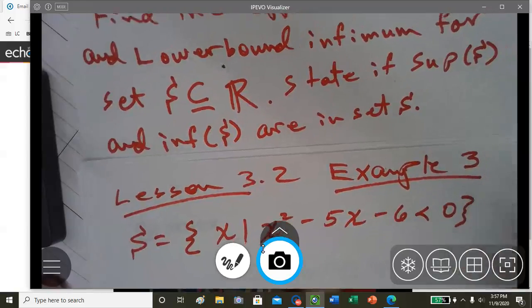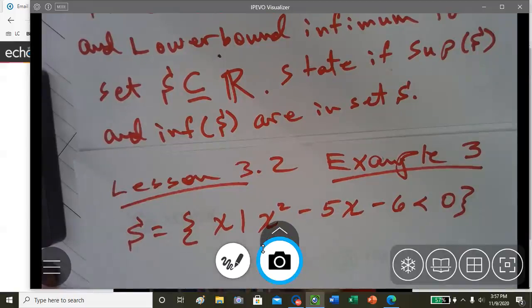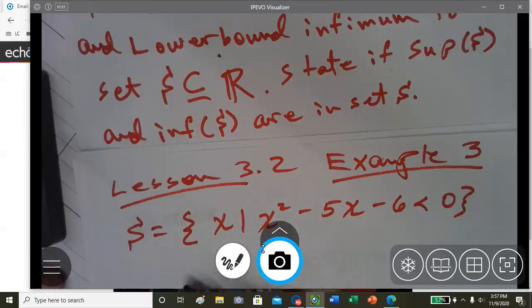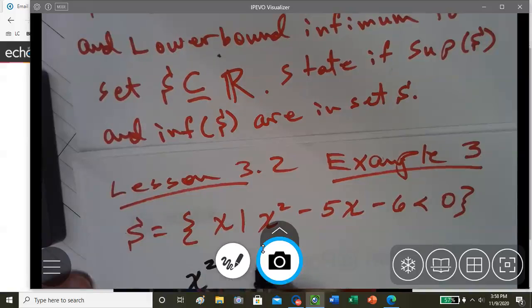Okay, so here we have set S where x² - 5x - 6 is less than 0. So basically we're solving for an inequality equation, x² - 5x - 6.